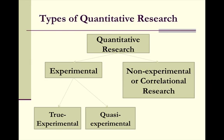In the experimental category, you have true experimental and quasi-experimental. True experimental is where you have a control group and a group of variables. Quasi-experimental is anything besides that.